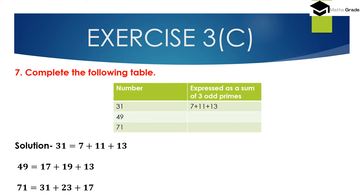Question number 7: Complete the following table — express the number as the sum of 3 prime numbers. For 31: 31 is the sum of 7 + 11 + 13.